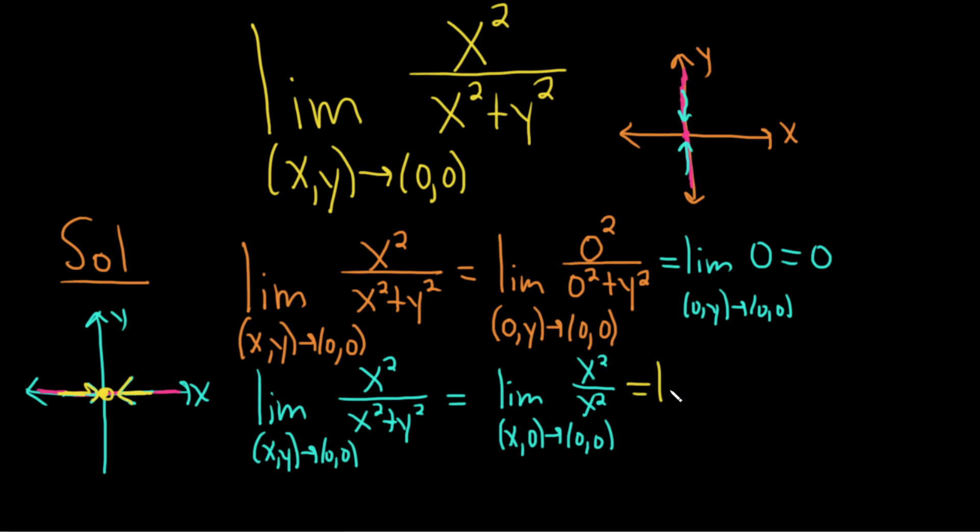This is equal to the limit as (x,0) approaches (0,0) of 1, right? Because x squared over x squared is 1. And that's just 1.